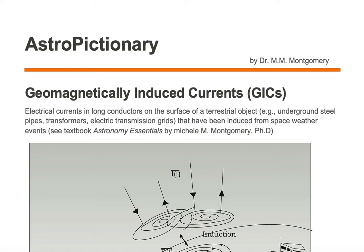Geomagnetically induced currents, or GICs for short, are electrical currents in long conductors on the surface of a terrestrial object that have been induced from a space weather event.